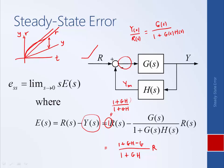And so if we rearrange E(s) into this form, we can take the limit as s goes to zero and we can get a conclusive understanding of the steady state error.